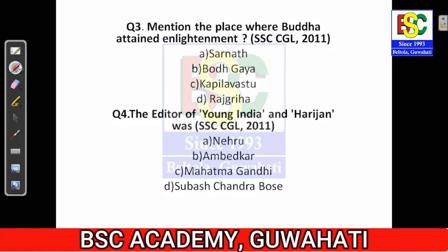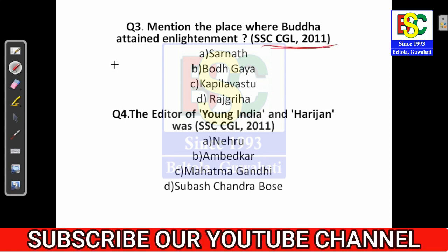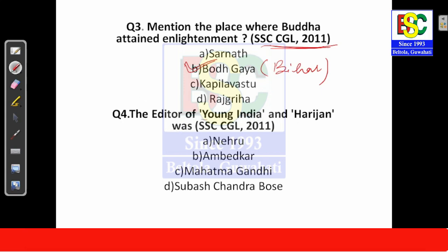Question number three: mention the place where Buddha attained enlightenment. This is a very important question from ancient history, also asked in 2011. The answer is option B — Bodh Gaya, which is nowadays in Bihar, India.